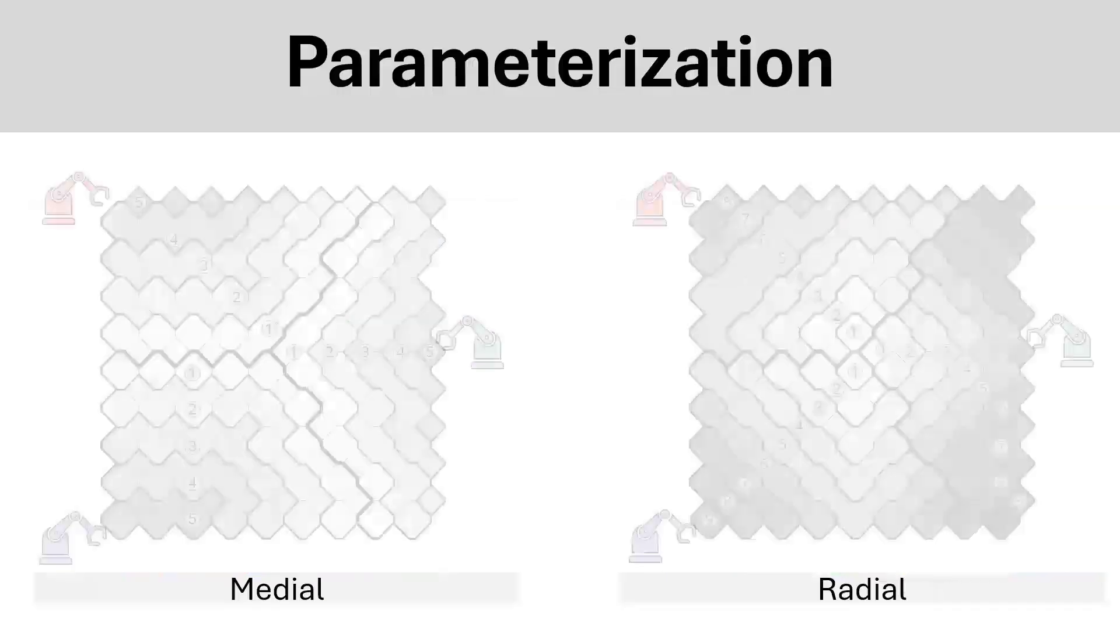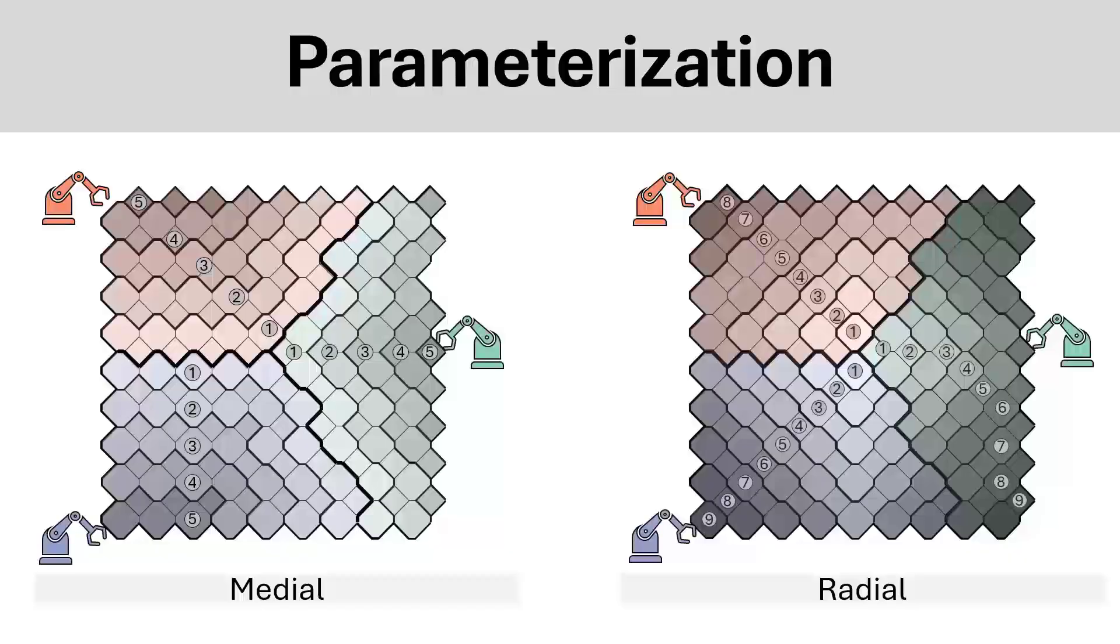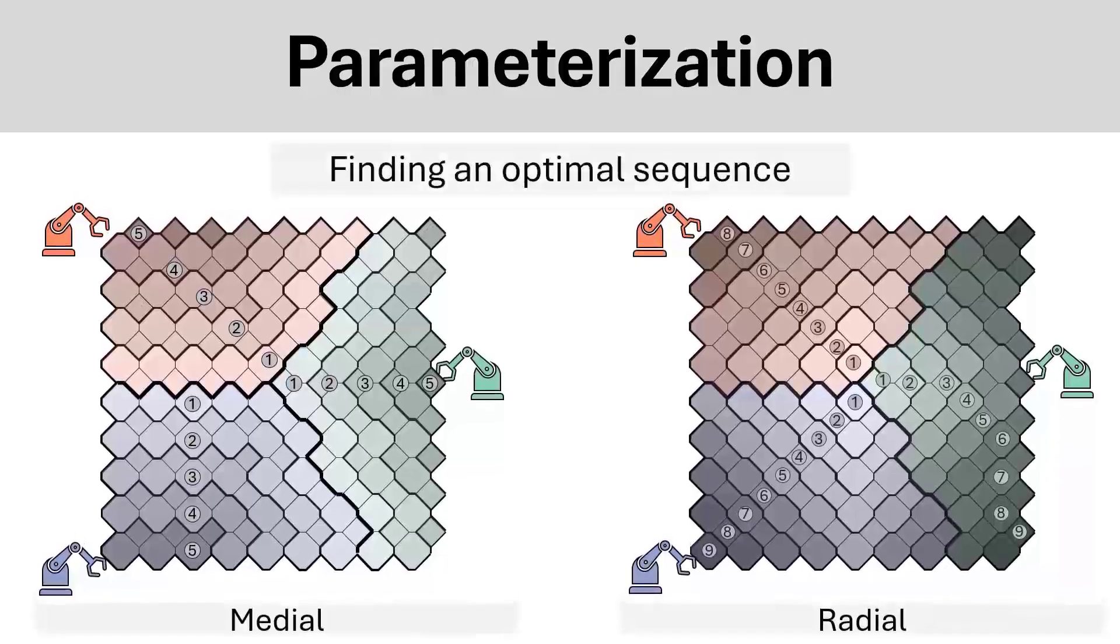We can then apply this to a cellularized space, where we use cell topology to create clusters of cells. What this looks like in the practical sense is robots can start printing at different clusters to avoid collision. The main question then is how do we find the optimal sequence of printing these clusters?